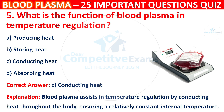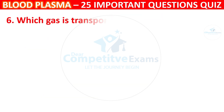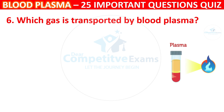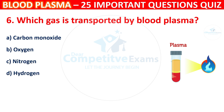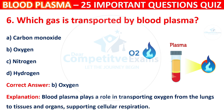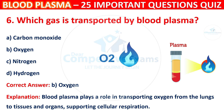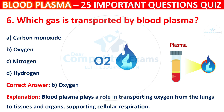Question 6: Which gas is transported by Blood Plasma? Your options are Carbon Monoxide, Oxygen, Nitrogen, or Hydrogen. The correct answer is B, i.e. Oxygen. Blood Plasma plays a role in transporting oxygen from the lungs to tissues and organs, supporting cellular respiration.